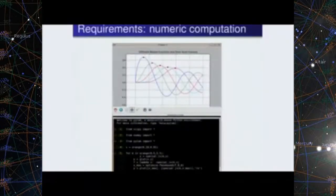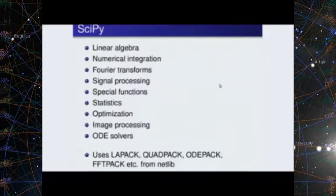If you look at numeric computation, there is a library called SciPy which supports a variety of traditional numerical computing — linear algebra, numerical integration, Fourier transform, signal processing, special functions, statistics, optimization, image processing, and ordinary differential equation solvers. Underneath SciPy uses well-established libraries like LAPACK, QUADPACK, ODEPACK, and FFTPACK, all written in Fortran or C. SciPy exports all of these into a Pythonic interface that is very easy to use. It is not enough to generate numbers — you also want to visualize them. With just three lines of code, you are able to create a 3D interactive visualization.